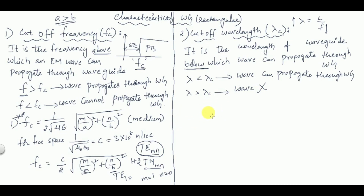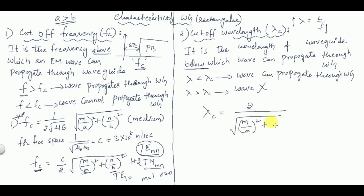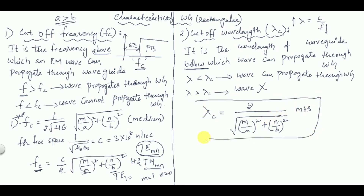For free space, the cutoff wavelength formula is derived from λc = c/fc. Substituting the fc formula, we get: λc = 2 / √((m/a)² + (n/b)²) meters. This is the formula for cutoff wavelength in free space.